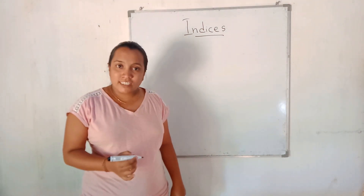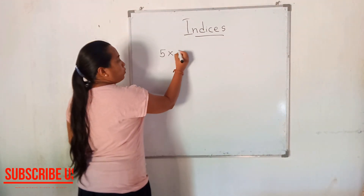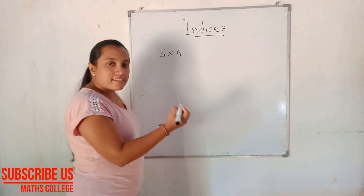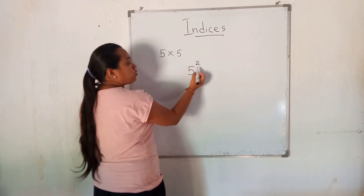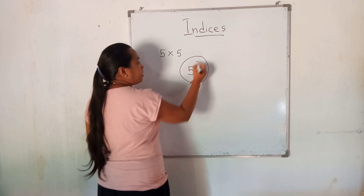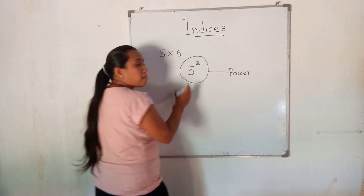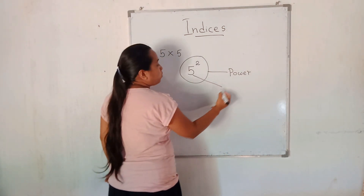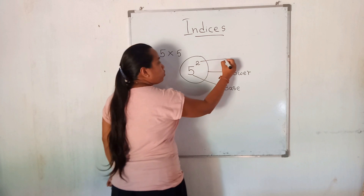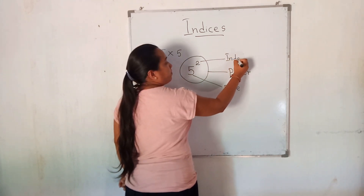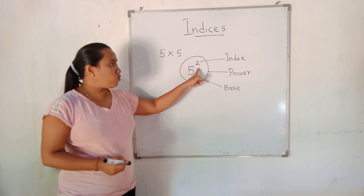What are the three words? Power, index, and base. For example, 5 multiplied by 5 is the product, which can be written as the power 5 to the power 2. The number 5 is called the base, and the number 2 is the index. So in 5 to the power 2, the base is 5 and the index is 2.